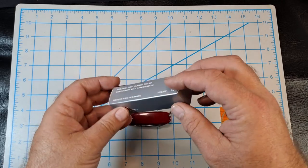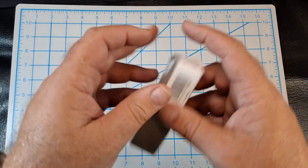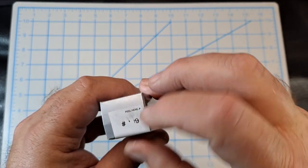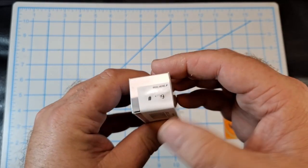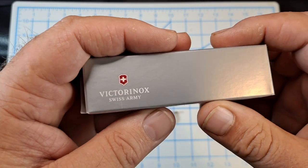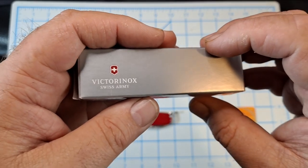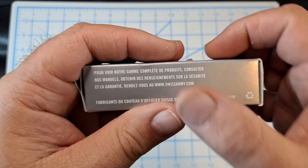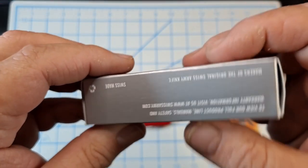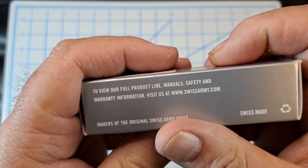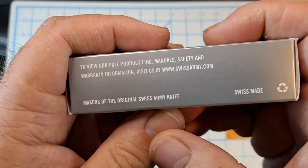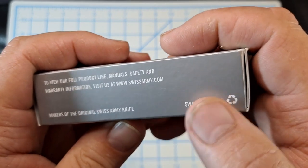This is the red Tinker. I got this at Walmart. It says $10.97, kind of rubbing off - that was the little slot they had it in the display case. Victorinox Swiss Army, you can read that if you want. Back here says to view our full product line manual safety warranty, visit swissarmy.com. Makers of the original Swiss Army knife, Swiss made.